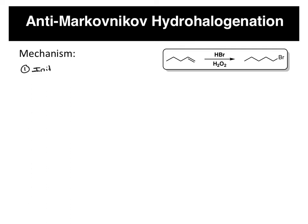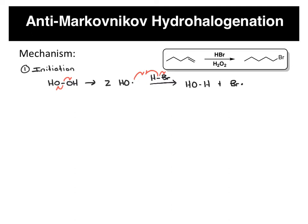First step: initiation. The thing about a peroxide, like hydrogen peroxide, is the oxygen-oxygen bond is pretty weak, and what can happen is that it can break apart to give us two peroxy radicals or hydroxy radicals. Next we have a second part of the initiation, where the hydroxy radical reacts with HBr and abstracts the hydrogen, giving us the bromine radical. This forms water plus a bromine radical.